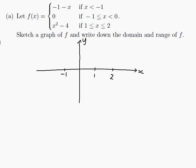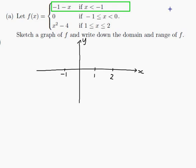First let's do this part: minus 1 minus x if x is less than minus 1. That would be a line with slope negative 1 and y-intercept minus 1. If we put in x equals negative 1 we get minus 1 minus minus 1, which gives us 0. So my function is not defined at minus 1 and it goes up with slope minus 1.